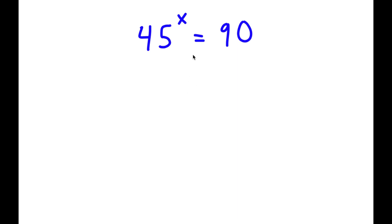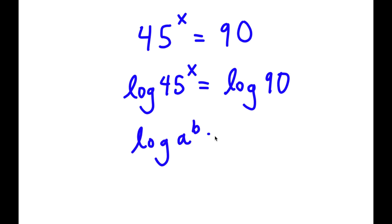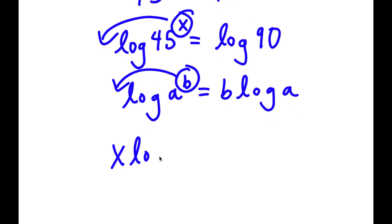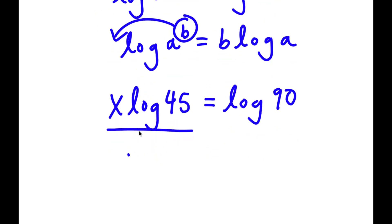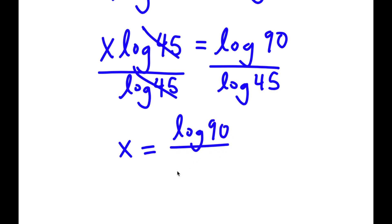In this problem, I have 45 to the power of x is equal to 90. To solve this, I'm going to take the log on both sides: log of 45 to the power of x equals log 90. Using the exponent rule, I can move x to the front: x times log 45 equals log 90. Dividing both sides by log 45 gives x equals log 90 over log 45.